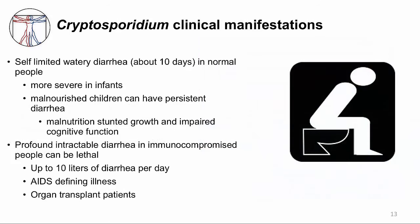Clinically, Cryptosporidium causes a self-limited watery diarrhea that lasts about 10 days — this is the common scenario for someone who is relatively healthy and immune-competent. However, the illness can be more severe in infants, and in malnourished children it can cause a persistent diarrhea. And like Giardia, the exacerbated malnutrition can stunt growth and cognitive development.